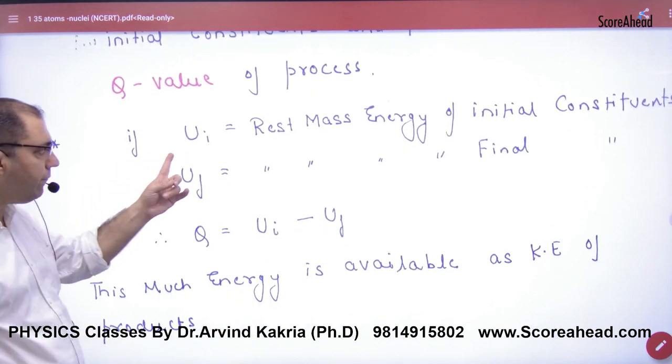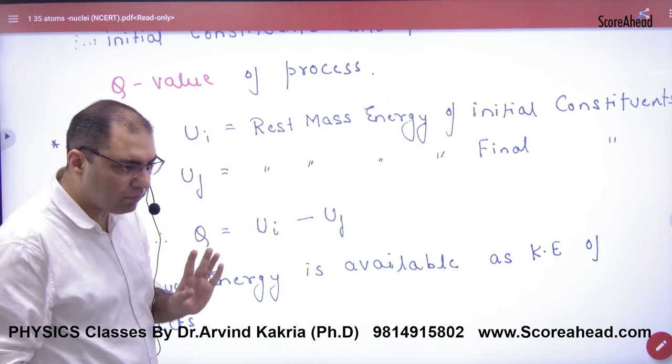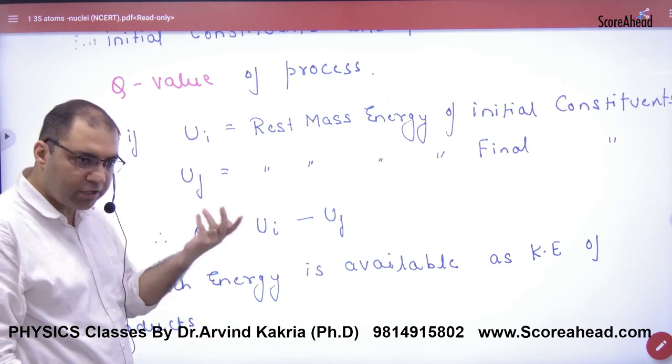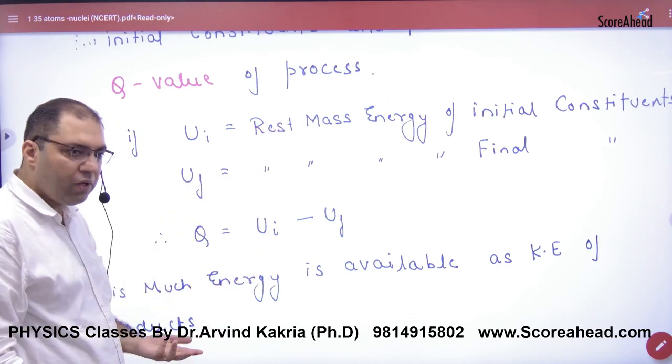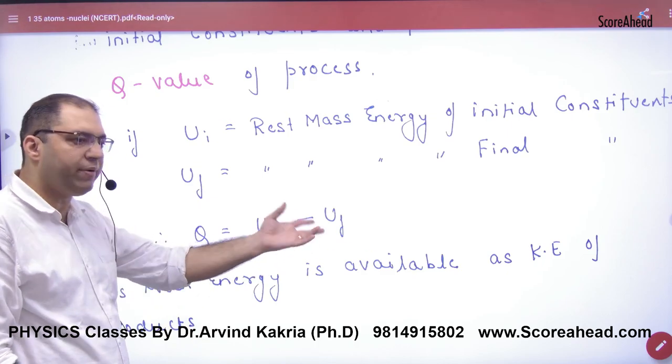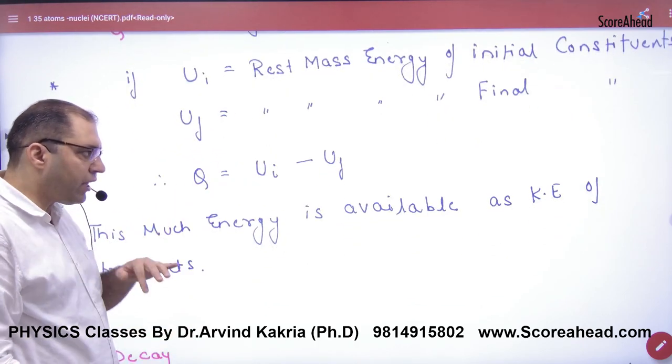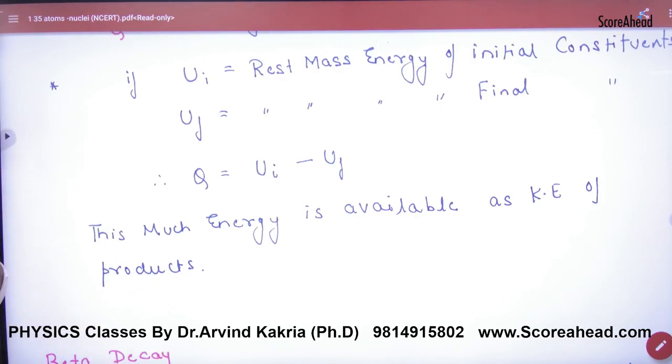We have also written Ui means rest mass energy of initial constituents, and Uf means final constituents. The product and the reactants. And what is Q value? Ui minus Uf. Now this energy difference will be available as kinetic energy of products.